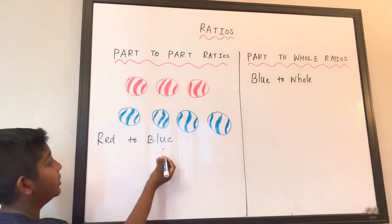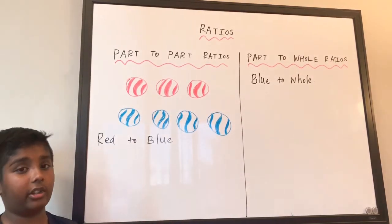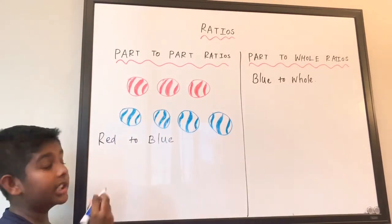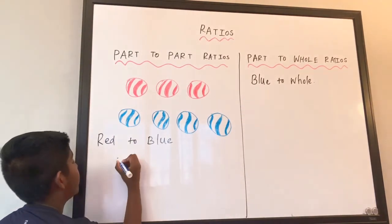So red to blue. We have to find out how many red marbles there are first. One, two, three - there are three red marbles. So we're going with three.